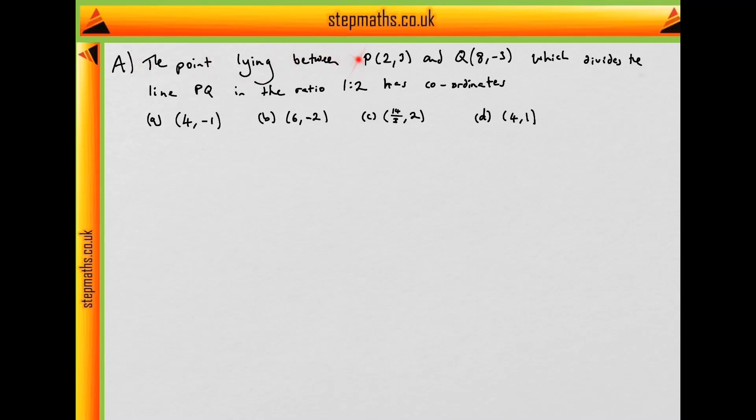So part A says the point lying on the line between P, which is (2, 3), and Q, which is (8, -3), which divides the line PQ in the ratio of 1 to 2, has what coordinates?